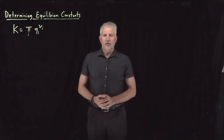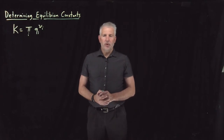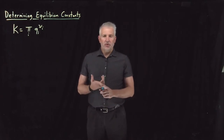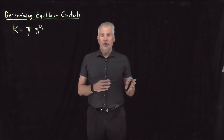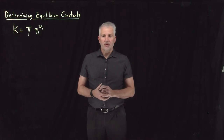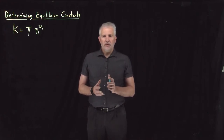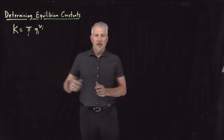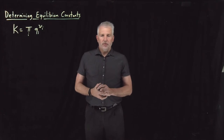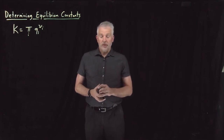We've done a few useful things with equilibrium constants so far. If we know the value of an equilibrium constant, we can use that to determine which direction a reaction is going to proceed. We can use that to determine exactly how far forward or backwards a reaction will proceed and where it will reach equilibrium. But doing either one of those things requires that we know the value of the equilibrium constant, the value of this constant K. So far in the problems we've considered, we've considered the value of that constant to be given to us.